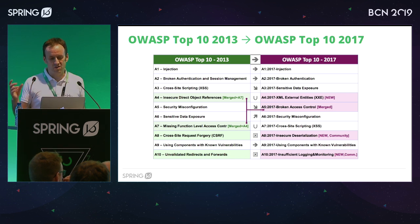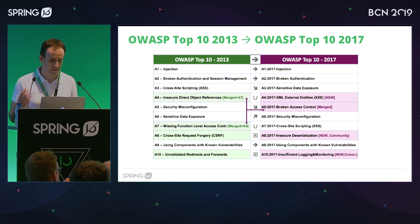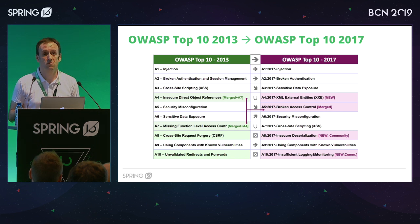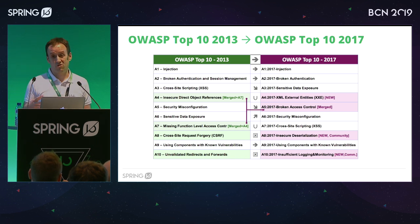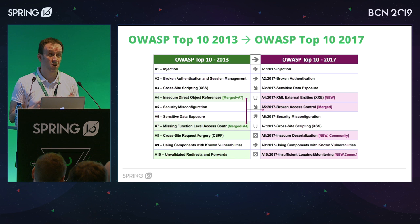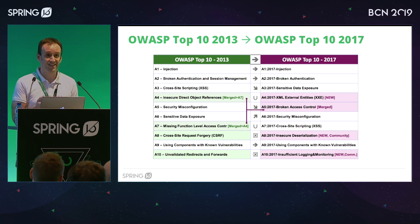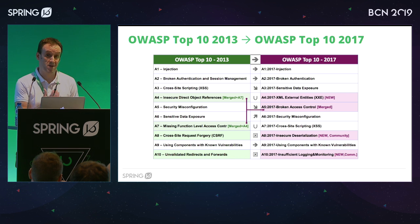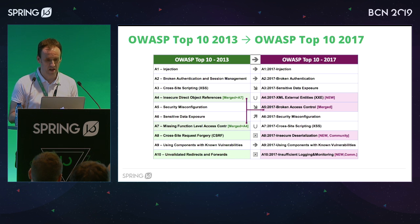They have added new risks like XML external entities, insecure serialization, and insufficient logging and monitoring. As you can see, they are not actually new — maybe we have seen them more frequently in recent years, that's why they are in the top 10. But we are not talking about new things. The problems are still there, which means the technology and the way we are building applications may not be the best approach, because in the end we have similar issues.